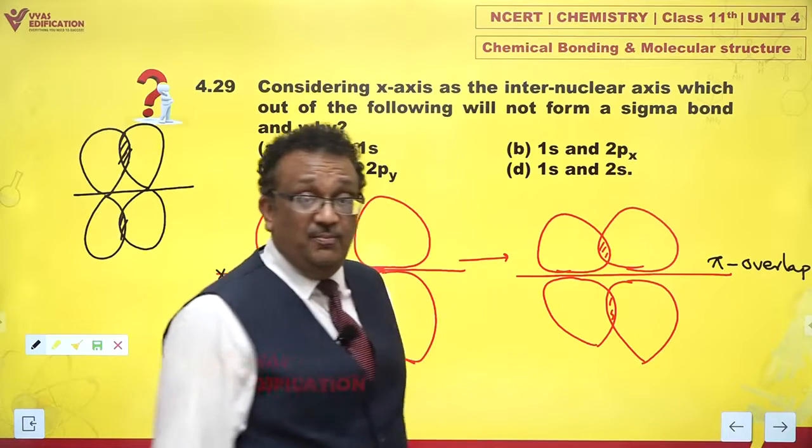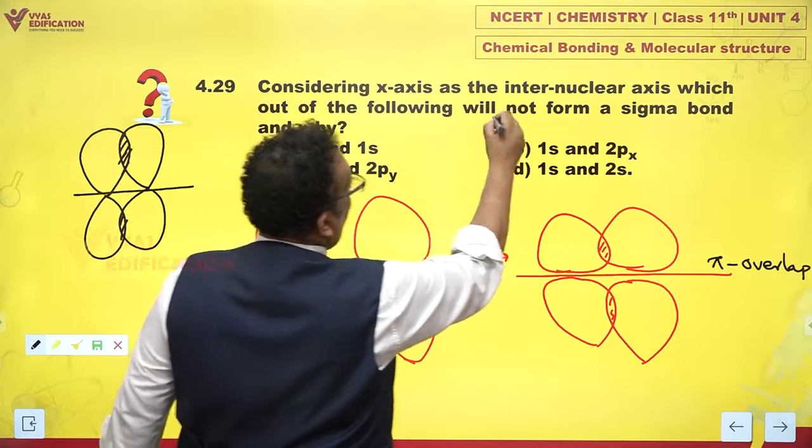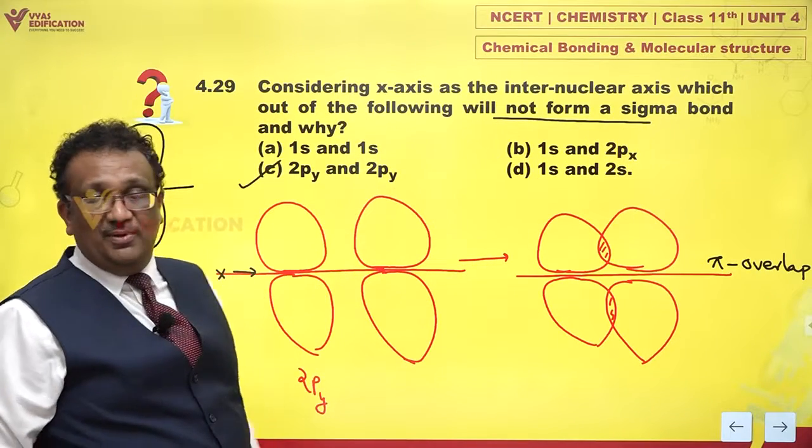So, is it giving me a sigma bond? No. It's giving me a pi bond. So, not form a sigma. So, c is not forming a sigma bond.